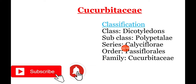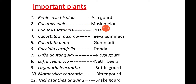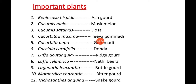Coming to the important plants of Cucurbitaceae. The first one is Benincasa hispida, ash gourd. Next, Cucumis melo, known as musk melon. Next, Cucumis sativus, known as cucumber. Next, Cucurbita maxima, a type of pumpkin, and Cucurbita pepo, another pumpkin variety.